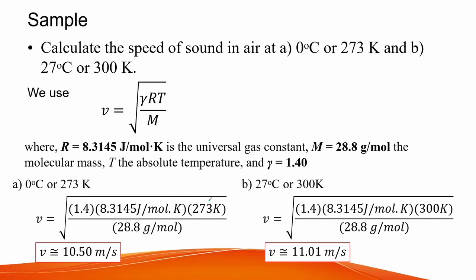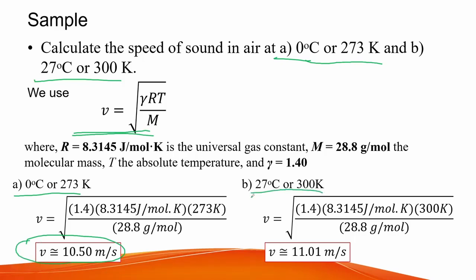Here we calculate the speed of sound in air at 0°C (273 K) and 27°C (300 K). Using the ideal gas expression, at 0°C the speed is around 331 m/s, while at 27°C it is around 347 m/s. The result shows that at higher temperature the speed of the wave is higher.